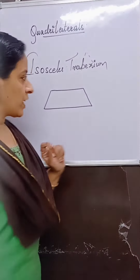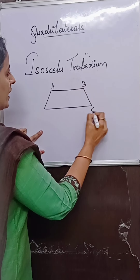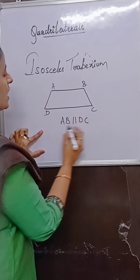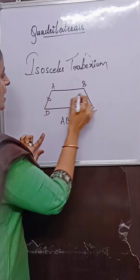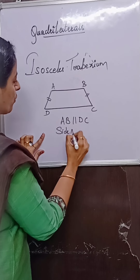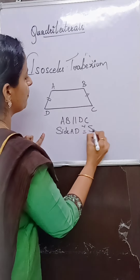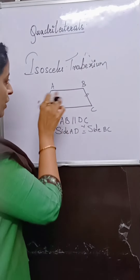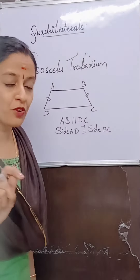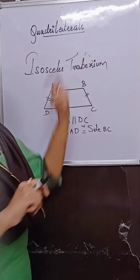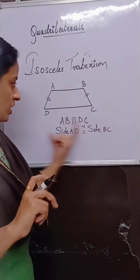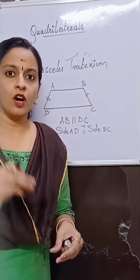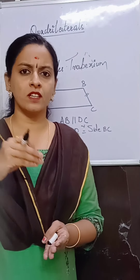I have drawn a quadrilateral ABCD where AB is parallel to DC. If side AD is congruent to side BC — that is, the two non-parallel sides are congruent — then this quadrilateral becomes an isosceles trapezium.